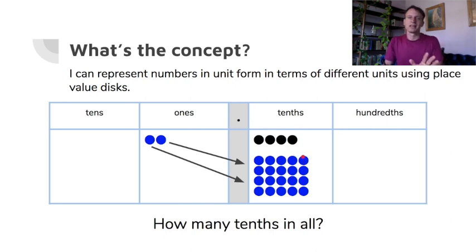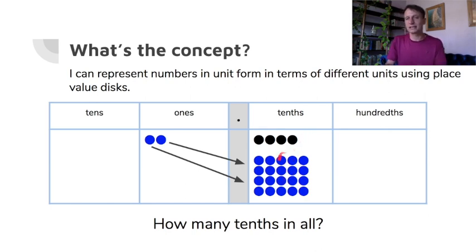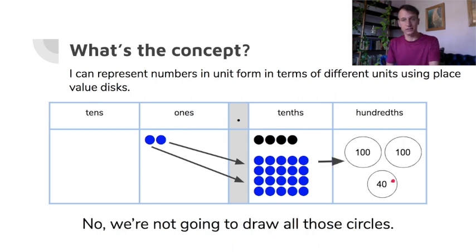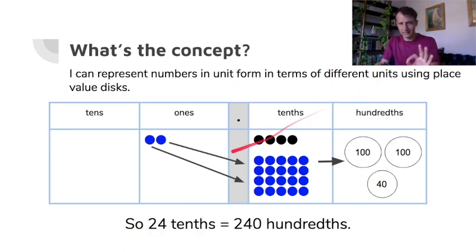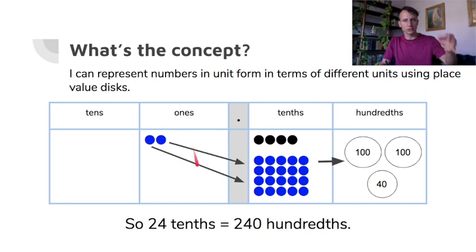Now if you were to take those 24 dimes and cash them in for pennies — you go to the bank and say 'I have 24 dimes, give me pennies' — how many pennies would that be? 24 dimes is two dollars forty cents — 240 cents — 240 hundredths. So: 2.4, two and four tenths, can also be expressed as 24 tenths, or 240 hundredths.